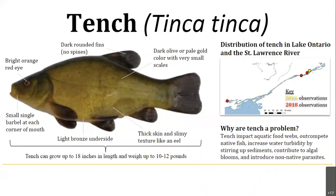Tench are a freshwater fish native to Europe and western Asia that were intentionally introduced through the aquaculture trade in many parts of the United States and Canada. Tench have been present in the St. Lawrence River and Canadian waters for some time but have been cited in the past couple of years within SLILO boundaries. Tench inhabit weedy, muddy water bottoms and have high reproductive rates, long lifespans, and can survive in low-oxygen environments. They are generalized predators whose diet includes fish eggs, snails, and other macroinvertebrates, putting them in direct competition with many native fish species and desirable sport fish. Tench can diminish aquatic food webs, increase water turbidity, and introduce non-native parasites into the Great Lakes. Early detection of tench is extremely important in preventing their spread into the Great Lakes basin.